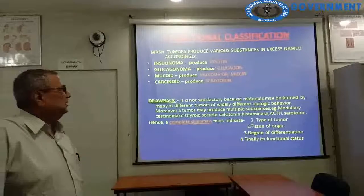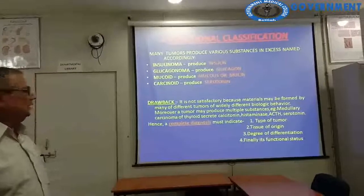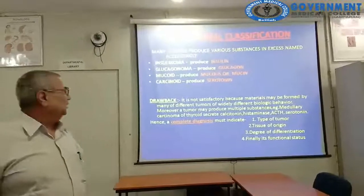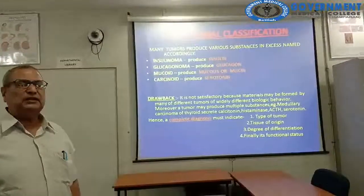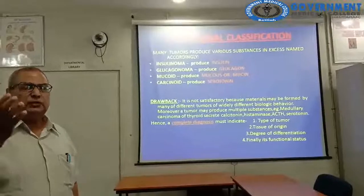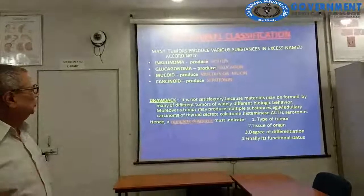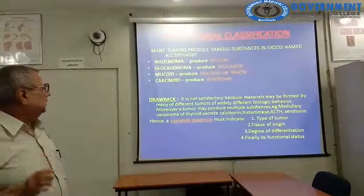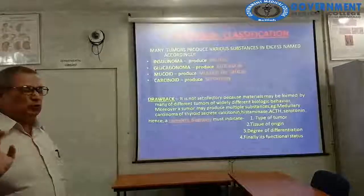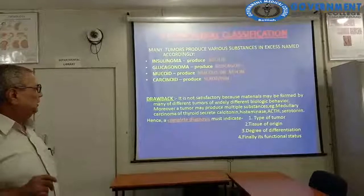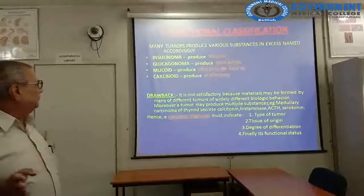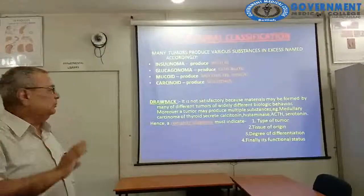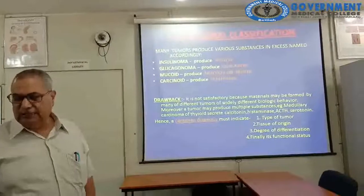Functional classification: many tumours produce various substances in excess and are named accordingly — insulinoma produces insulin, glucagonoma produces glucagon, mucoid tumours produce mucin, carcinoid tumours produce 5-hydroxytryptamine or serotonin and histamine. However, this classification is also unsatisfactory and untenable because the same material may be formed by many different types of tumours.